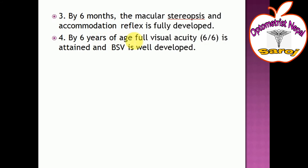After six months, macular stereopsis — meaning perception of depth — and the accommodation reflex are fully developed. Accommodation means the ability to see near and far objects clearly. Both macular stereopsis and the accommodation reflex become fully developed at this stage.